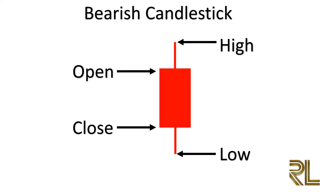Here's a bearish candlestick. Notice that a bearish candlestick is the opposite of a bullish candlestick — it shows how prices have moved down within the time frame that candlestick represents. Bearish candlesticks are usually represented by the color red.